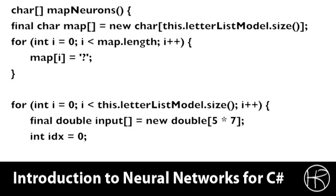Another very important aspect that the program must perform is to map the neurons. We have the output neurons — say we're recognizing the 26 Latin characters, we're going to have 26 output neurons. However, which output neuron belongs to which character? This is not inherently obvious. We need to query the neural network initially, feeding in exactly the training data, to see which training element ended up with which neuron after training was done.